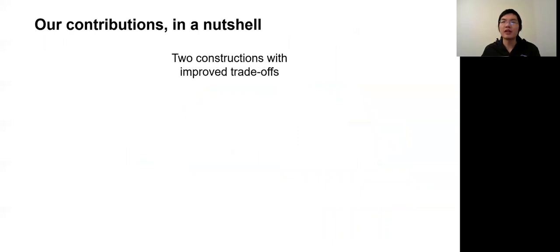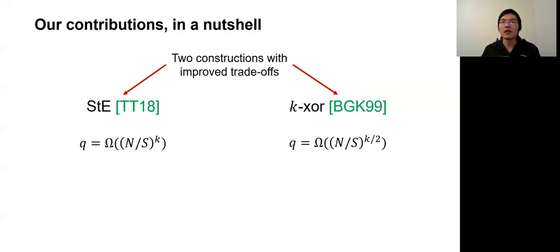A bit more precisely, the main contribution of this paper is to study the security of two natural symmetric encryption schemes in a memory bounded setting. The first scheme is a sample-then-extract scheme proposed by Tessero and Thorvaldsen, and the second scheme is a k-xor scheme by Bellare, Goldreich, and Krawczyk. Both schemes depend on parameter K, which corresponds to a number of calls to the underlying PRF, and achieve better and better security as K increases. In both settings, the trade-offs admit Q to be larger than big N for small memory bound S and sufficiently large K.